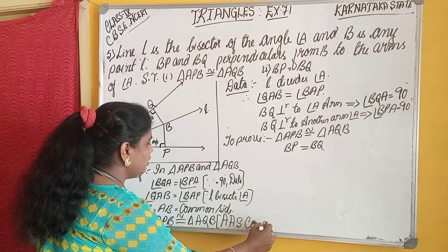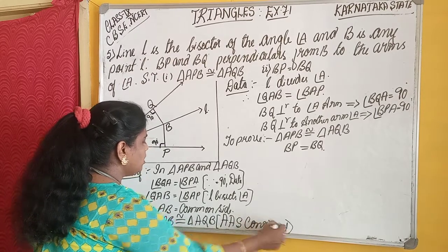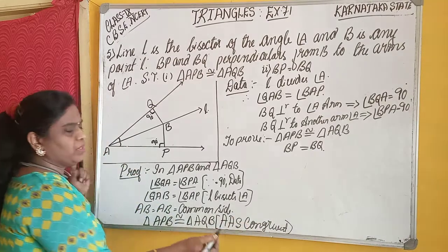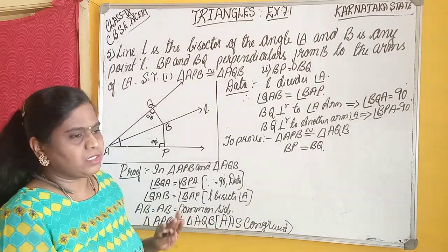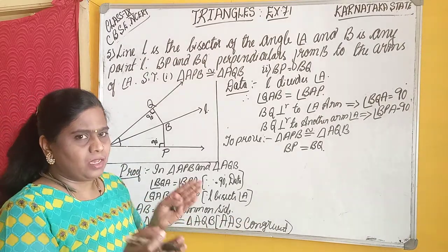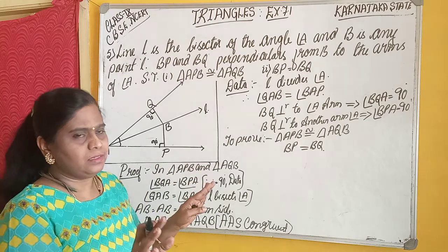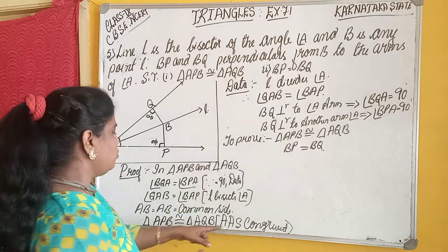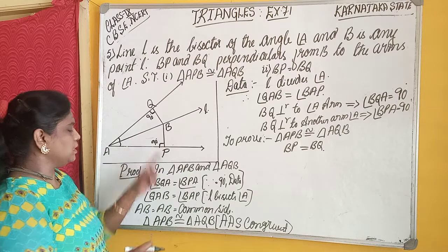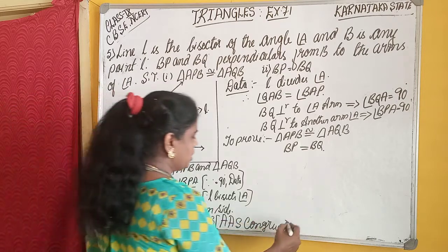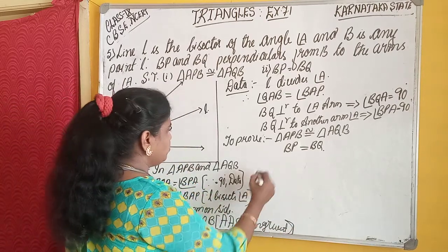Why are we writing AAS? Because for ASA, the side S should be in the middle of both angles. Here, the two angles are separate and the side is separate. Therefore, according to AAS congruency, this is proved.